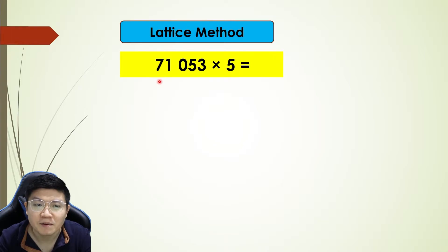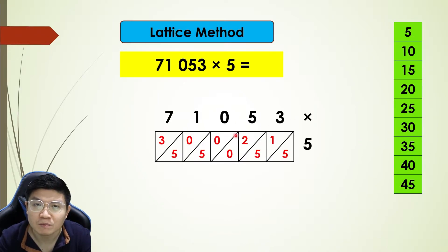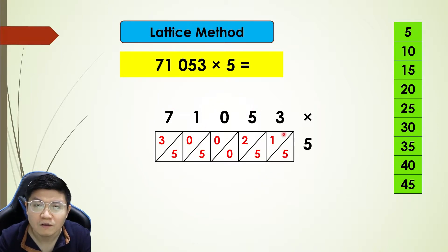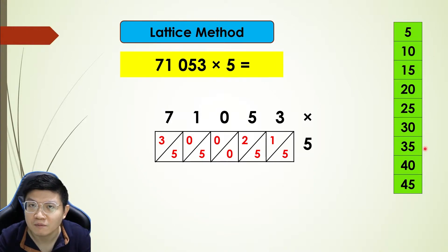So 71,053 times 5. Of course we need the times table of five. We draw the blocks: one, two, three, four, five — five digits means five columns. Multiplied by one digit means one row. Now we draw a diagonal line from end to end. The red-colored values come from the times table.